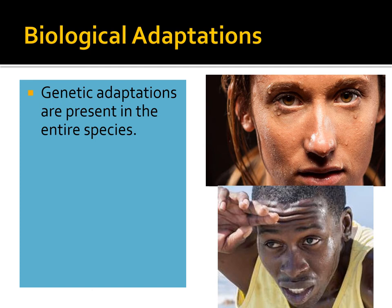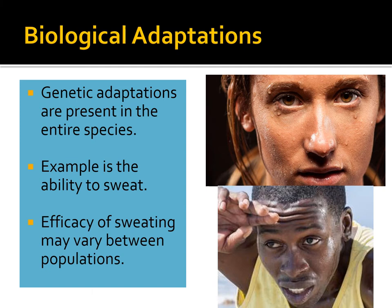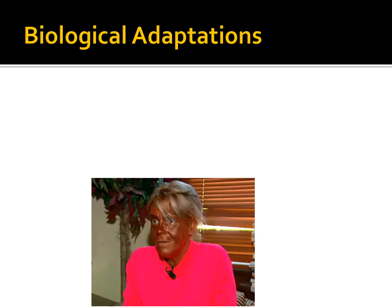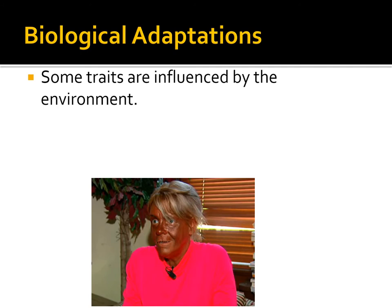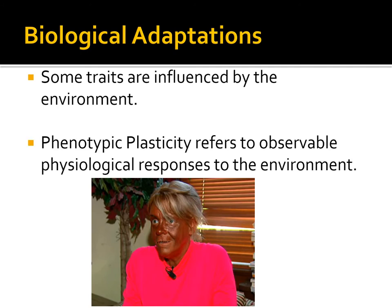Genetic adaptations are present in every entire species. An example in humans is our ability to sweat — all humans, except those born with specific genetic conditions, have the ability to sweat to cool our bodies down. The efficacy of sweating may vary between populations, but all humans have this basic ability. We also have adaptations that are heavily influenced by the environment. Skin tone, in a given individual's lifetime, can be heavily influenced by the environment — essentially the amount of UV exposure you get. We refer to this as phenotypic plasticity — the ability to slightly alter our outward appearance.